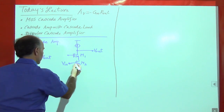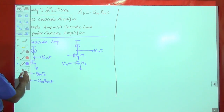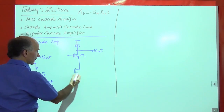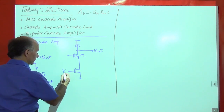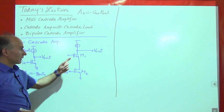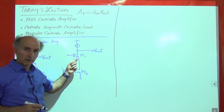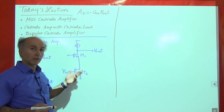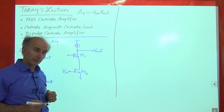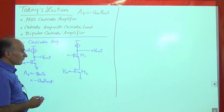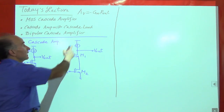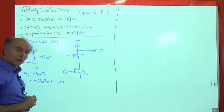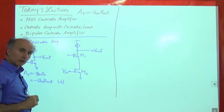To calculate the voltage gain of the cascode stage, we need to be careful. We have an input transistor M2 receiving Vin, and what is sometimes called the cascode transistor M1 at the output. Now let's go through the two-step method.